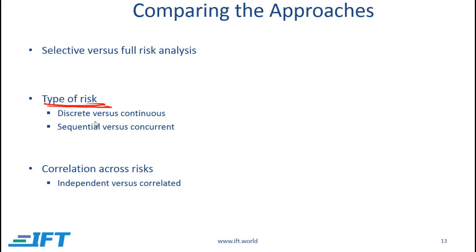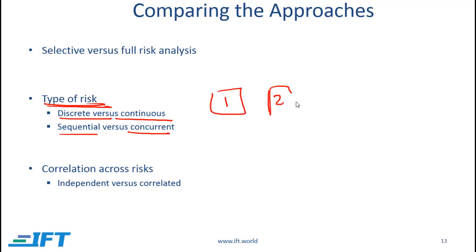In terms of type of risk, we need to recognize two dimensions. One dimension is discrete versus continuous and the other is sequential versus concurrent. If we have a situation where risky events can only take one of a few possible values, then we say that we are dealing with discrete risk.